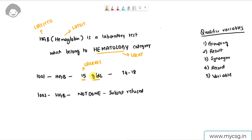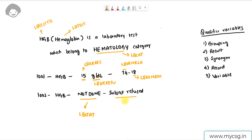The unit 'grams per deciliter' is stored in LBORRESU. The lower limit of the reference range is stored in LBORNRLO, which stands for normal range low, and the upper limit 18 is stored in LBORNRHI. For subject 1002, the not-done status is stored in LBSTAT, and the reason the test was not done is stored in LBREASND, which stands for reason not done.